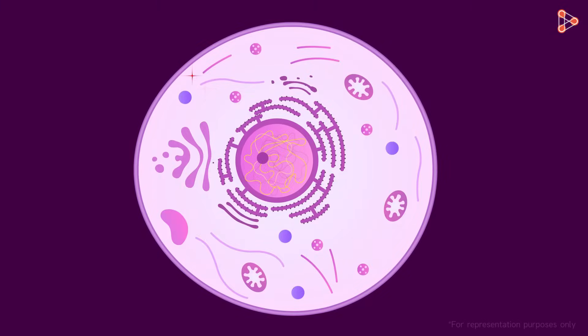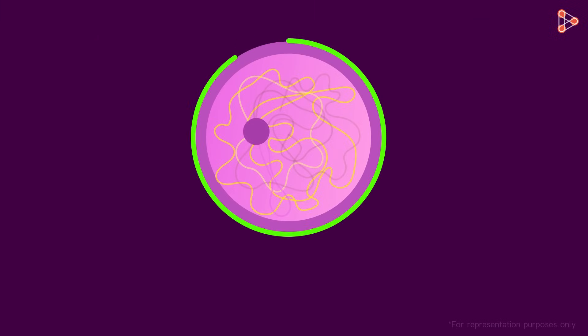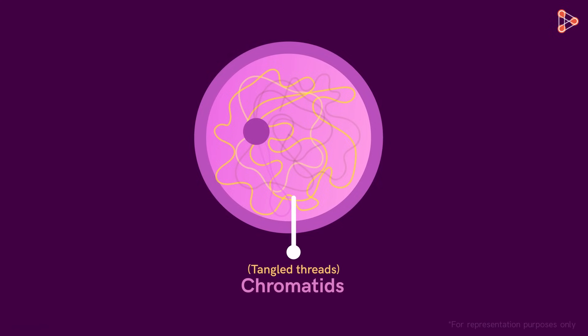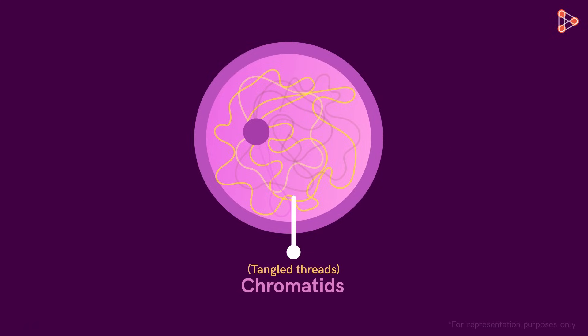Here we have this simple cell as an example. Can you see the thread-like structures here in the nucleus? These threads are called chromatids. They are usually tangled in this fashion when present in a regular active cell. Now what if this cell has to undergo division? Is it possible to divide this single cell into two equal halves with such a tangled bundle of threads? Of course not!